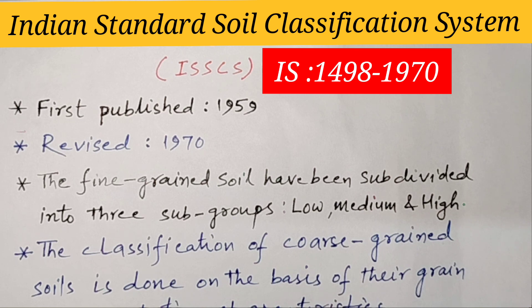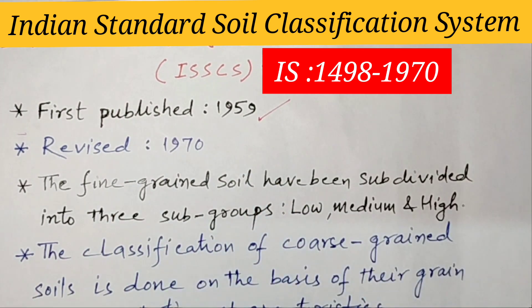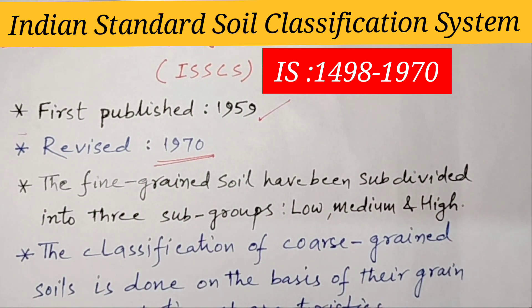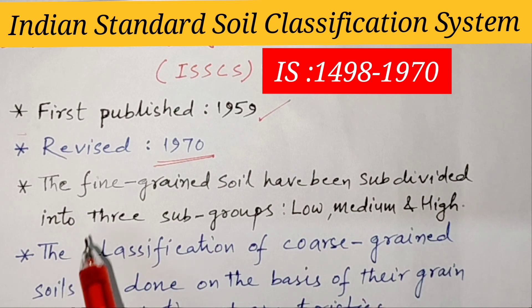The Indian Standard Soil Classification System for Classification of Soil for General Engineering Purpose was first published in 1959 and revised in 1970. Today's version is IS-1498-1970. The revision is based on the USCS, with the modification that the fine-grained soils have been subdivided into three subgroups of low, medium and high compressibility, as against only two in the Unified Soil Classification System.